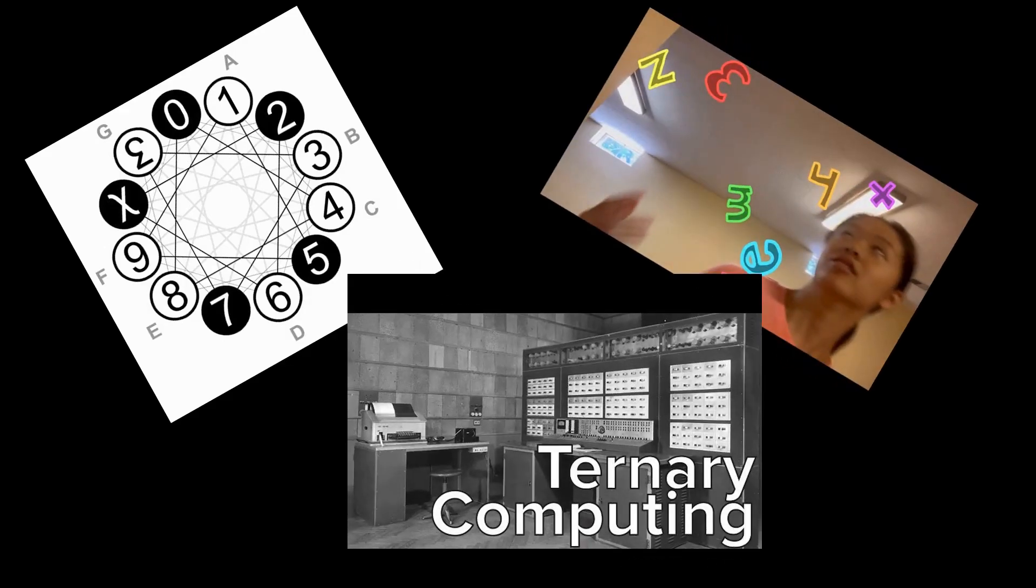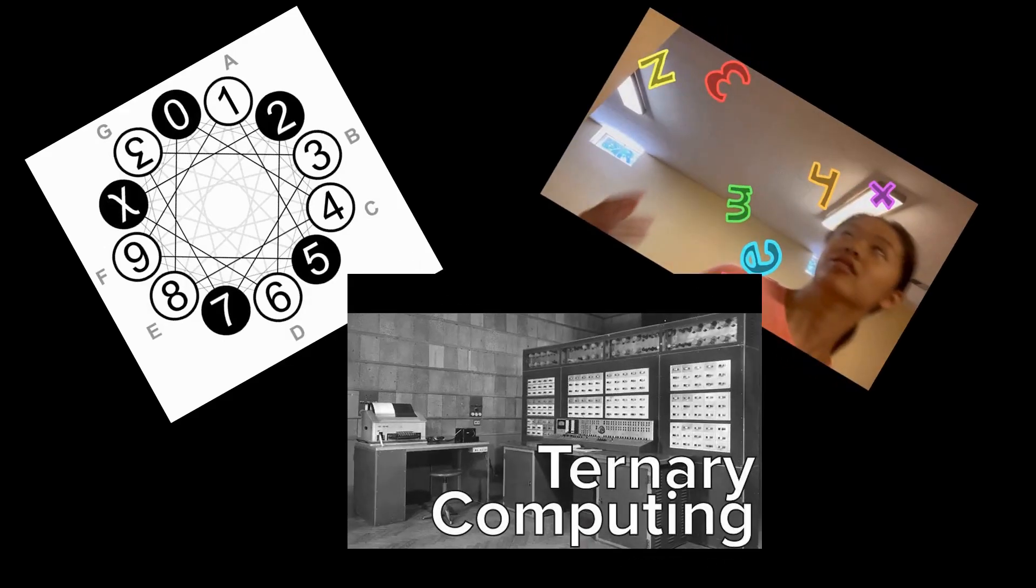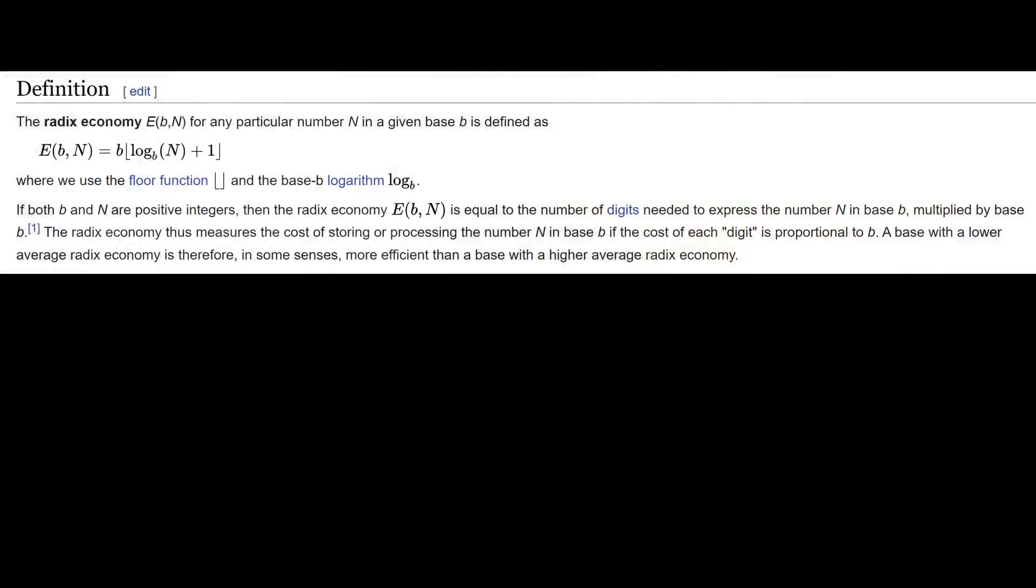Radix economy is something you'll hear about when people are talking about different number systems with different bases, and trying to determine which one is the best. But more precisely, radix economy is a measure of what base is most efficient in a certain specific way at writing numbers.